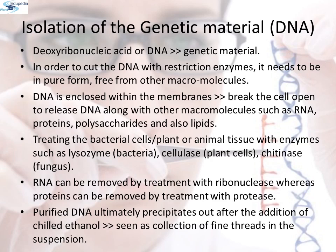First: Isolation of genetic material or DNA. In the majority of organisms, deoxyribonucleic acid (DNA) is the genetic material. In order to cut DNA with restriction enzymes, it needs to be in pure form, free from other macromolecules. Since DNA is enclosed within membranes, we have to break the cell open to release DNA along with other macromolecules such as RNA, proteins, polysaccharides, and lipids. This can be achieved by treating bacterial cells, plants, or animal tissues with enzymes such as lysozyme (from bacteria), cellulase (from plant cells), and chitinases (from fungi).